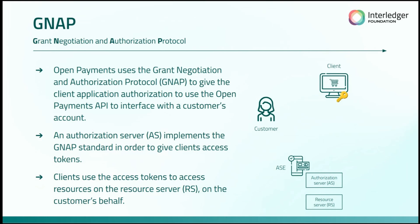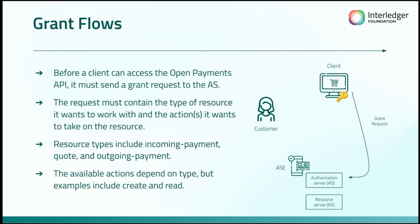Clients will use those access tokens to send requests to the resource server on the customer's behalf. Before a client can access the Open Payments API, it must send a grant request to the authorization server. This request must contain specific information like the types of resources it wants to work with, as well as the actions it wants to take on those resources. Our resource types are incoming payments, quotes, and outgoing payments, and those actions could be getting, creating, deleting, or modifying a resource.